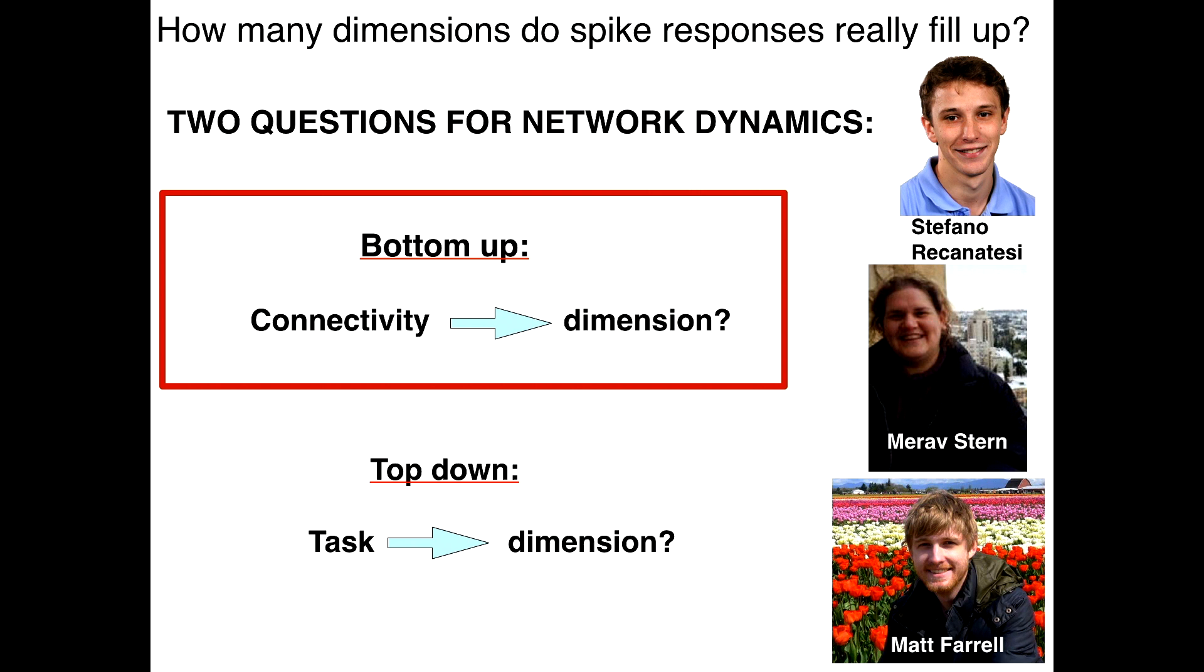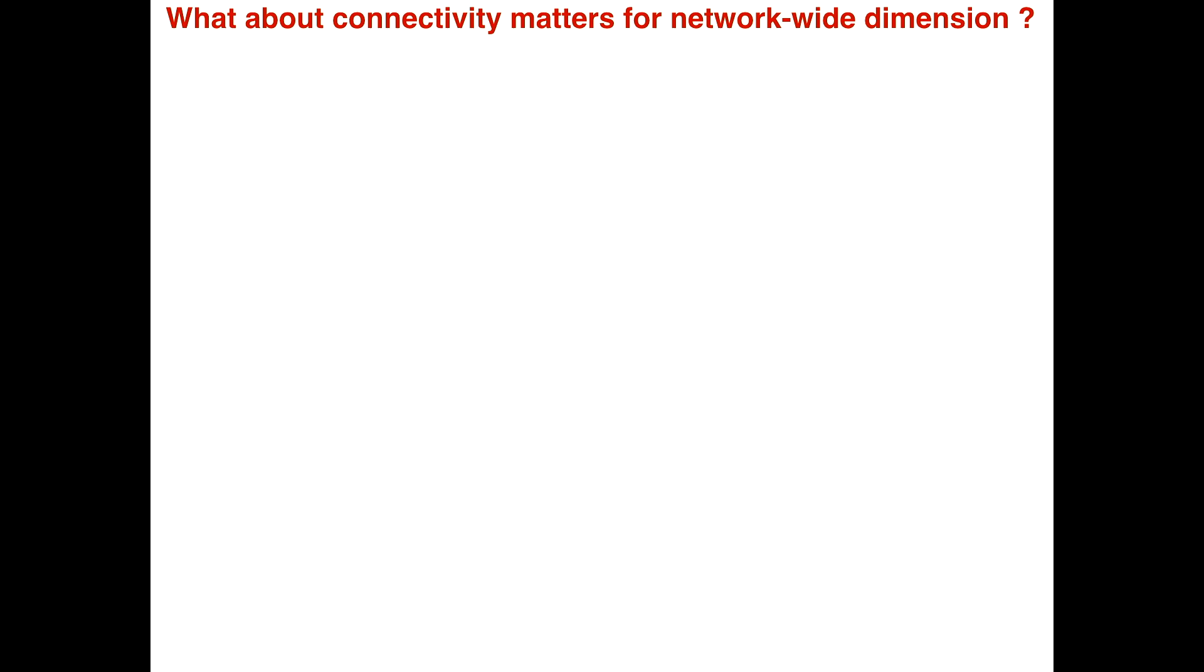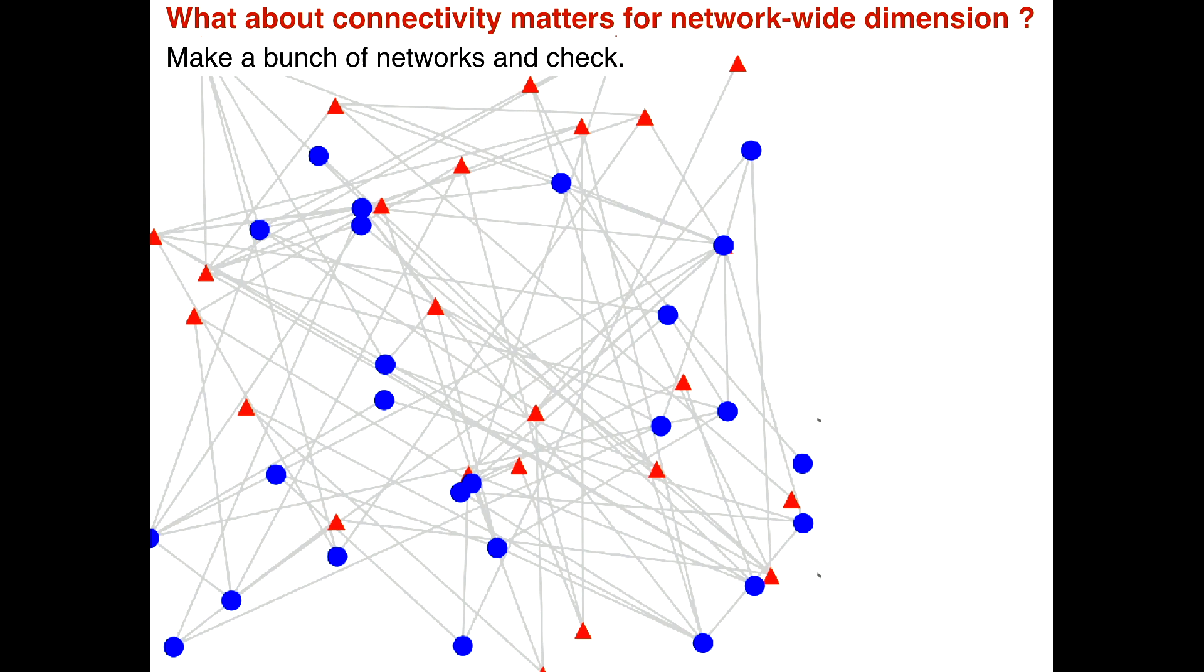All right, so let's just do an experiment. Our question is this, what is it about a general network's connectivity that actually matters for the dimension that it produces? Okay, so let's just make a bunch of networks and figure it out. So there is a network. And the thing that we care about in this part of the talk, actually the entire talk, is this, W. It's all about W, which is the actual connectivity of this network.